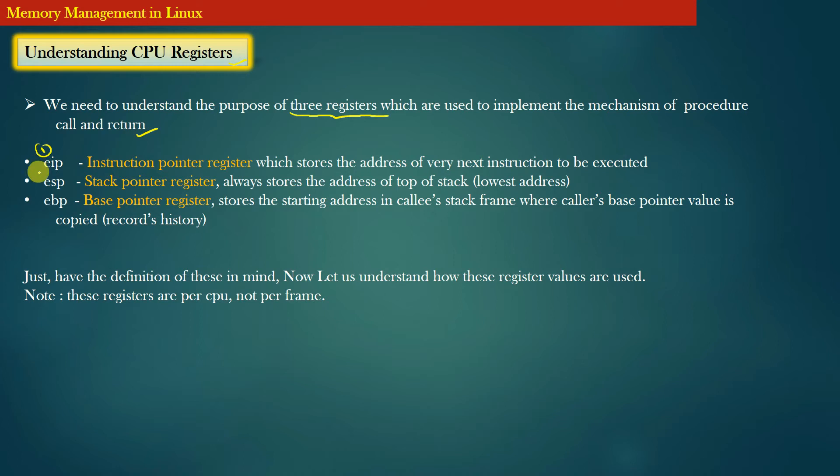We have these three registers. The first register is called instruction pointer register. This register stores the address of the very next instruction to be executed. In some implementations, this register can also be used to store the address of the current instruction which is being executed. If that is the case, we simply add one to the value of this instruction pointer, which gives us the address of the next instruction which will execute next.